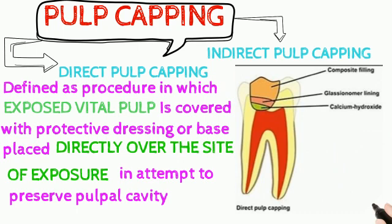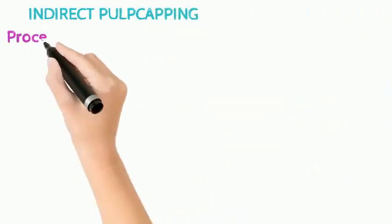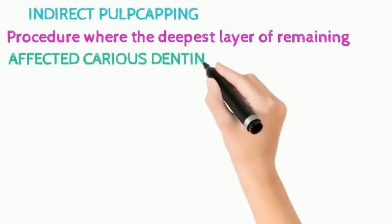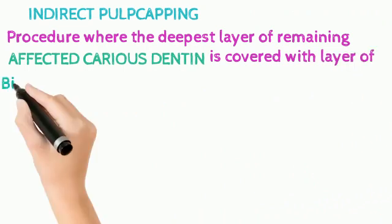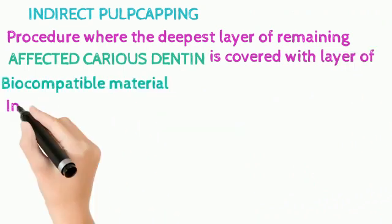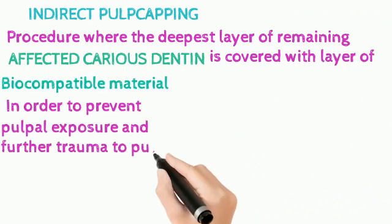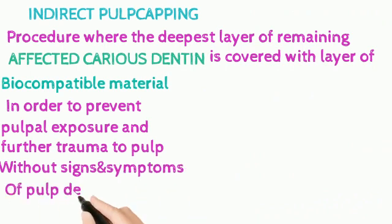Now let's go into indirect pulp capping. It is a procedure where the deepest layer of remaining affected carious dentin is covered with a layer of biocompatible material in order to prevent pulpal exposure and further trauma to the pulp, without signs and symptoms of pulp degeneration.